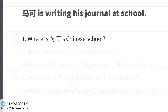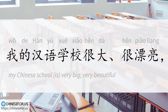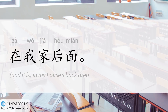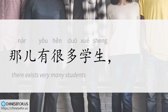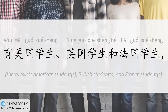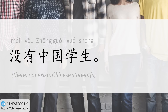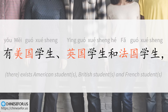Very good. Here are the questions again. Number one: Where's Ma Ke's Chinese school? 我的汉语学校很大，很漂亮。在我家后面。It's behind his home. Number two: What countries are the students from? 那儿有很多学生。有美国学生，英国学生，和法国学生。没有中国学生。They're from America, Britain, France, but not from China.